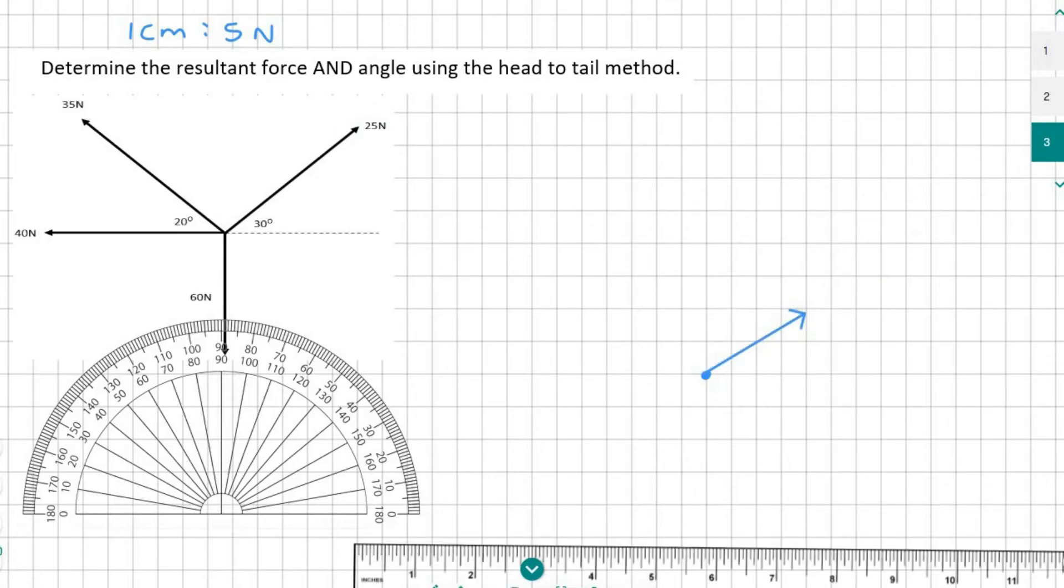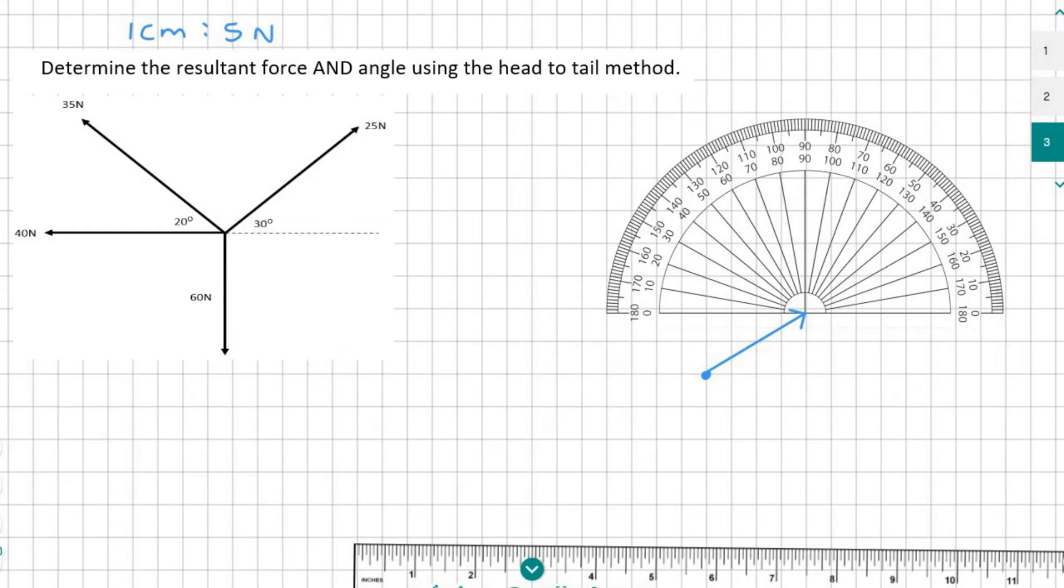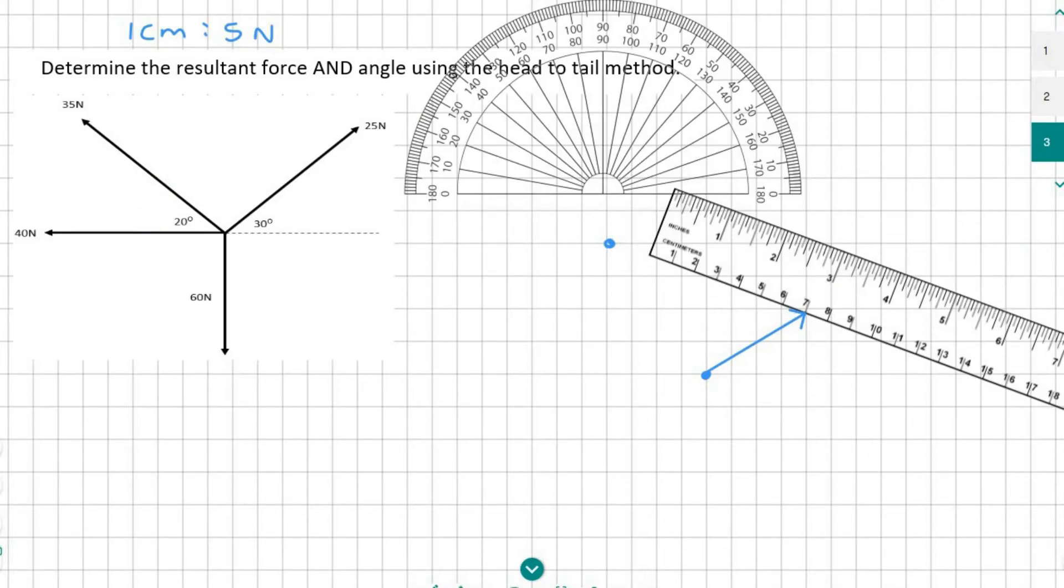I'm now going to do the 35 newton. So I take my protractor and I place it where we just finished, and I look at the angle of 20 degrees and I see that it's measured like that. So that means I'll go like this up to 20 degrees over there. Now 35 newtons because of our scale of one to five that'll be a seven centimeter long line. So there I've already positioned everything correctly and now I can draw a seven centimeter line like that.